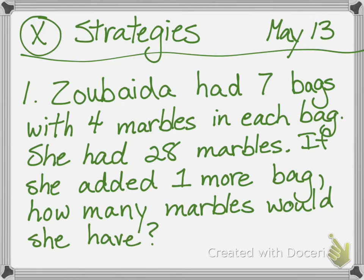Number one: Zubayda had seven bags with four marbles in each bag. Stop and make a picture in your mind — picture seven bags, and four marbles in each bag. She had 28 marbles. Now it says if she added one more bag, how many marbles would she have? If you just tell me the answer, it's wrong. I want you to show me this strategy, not just that you have your times tables memorized or that you can skip count.